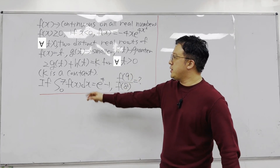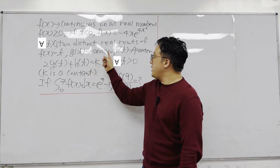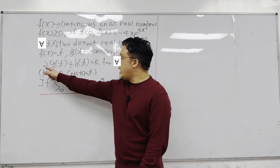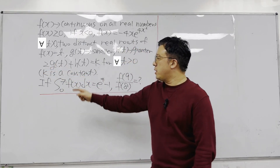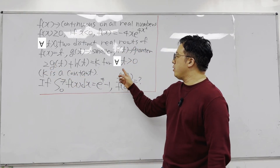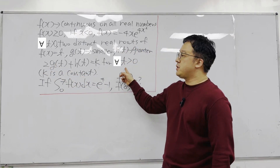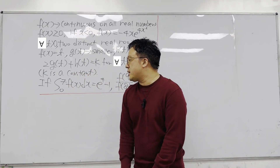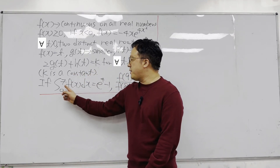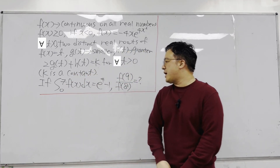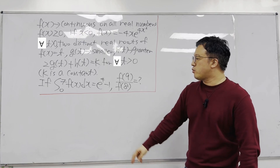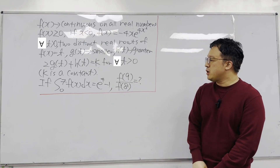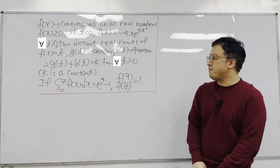We have a condition between g(t) and h(t): 2 times g(t) plus h(t) equals k for all positive values of t, where k is a constant. If the integral from 0 to 7 of f(x) dx equals e to the power of 4 minus 1, what is the value of f(9) over f(8)?